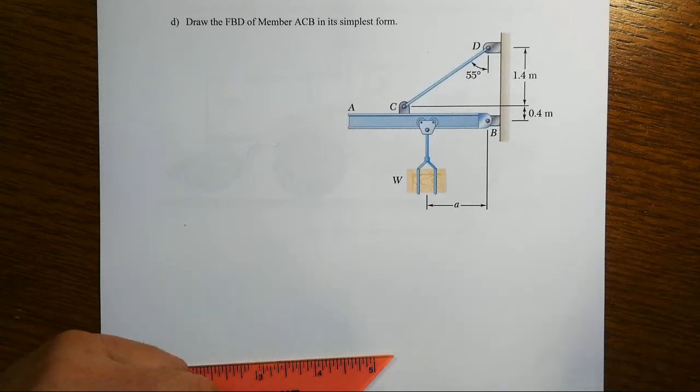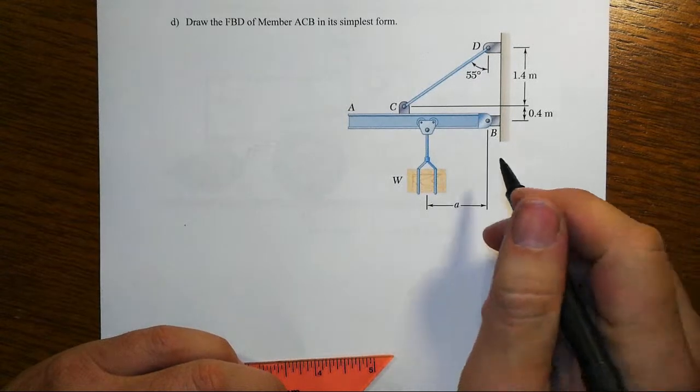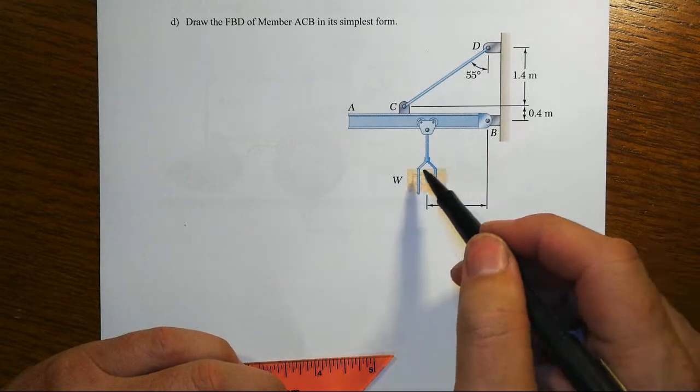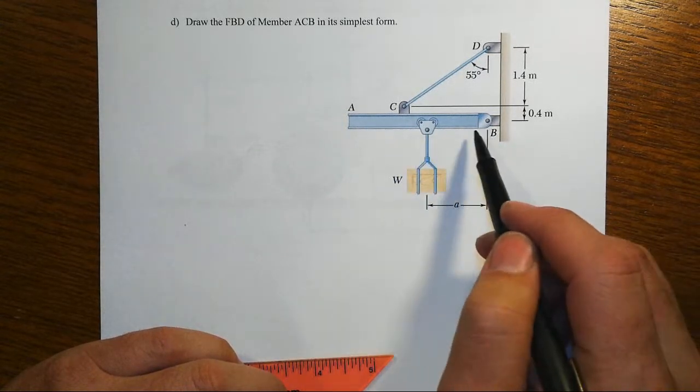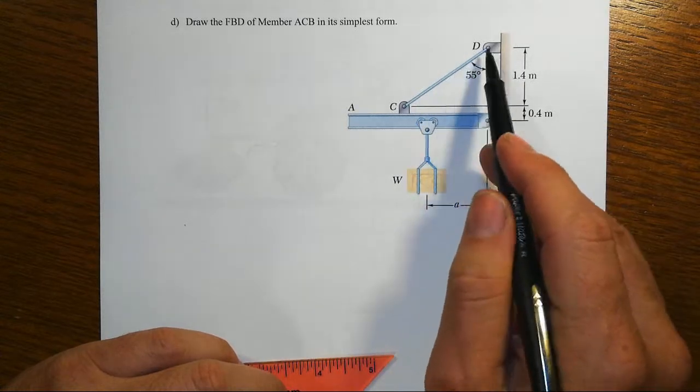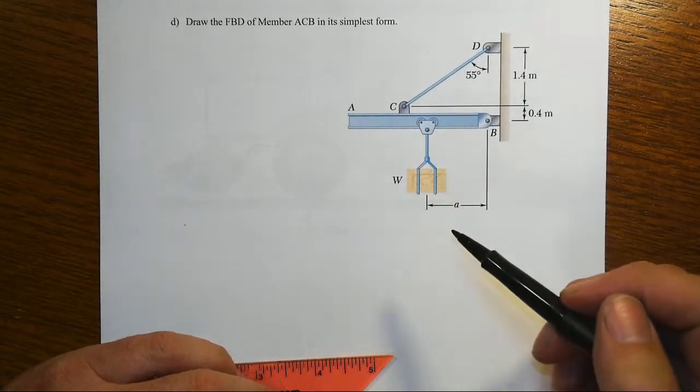This is a jib crane that we've got, typically a factory kind of situation, manufacturing plant. We've got a big old weight out here. We've got a beam. We've got a pin support here and a little tension rod up there to help this thing.